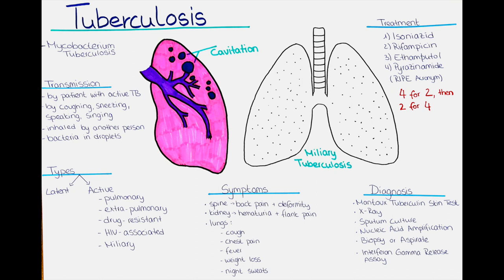How can we diagnose extra-pulmonary or latent tuberculosis? The diagnosis of extra-pulmonary TB depends on the affected organ system. For example, a biopsy or aspirate may be needed to diagnose TB of the lymph nodes, bone or joint. Vertebral TB can be diagnosed with a combination of clinical symptoms, imaging studies such as MRI, and microbiological tests such as AFB smear and the culture of biopsy specimens.